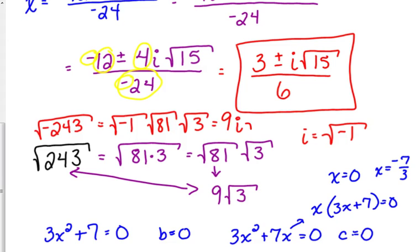The square root of negative 1 is i, the square root of 81 is 9, and 3 is not a perfect square. Good question. I kind of just breezed over that.